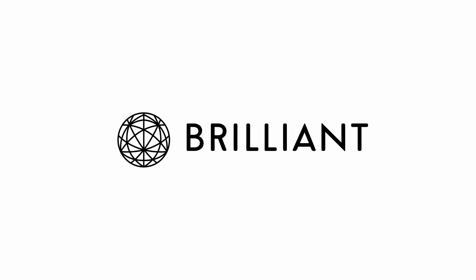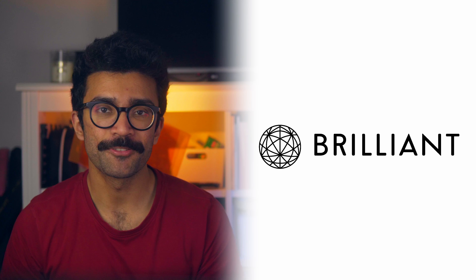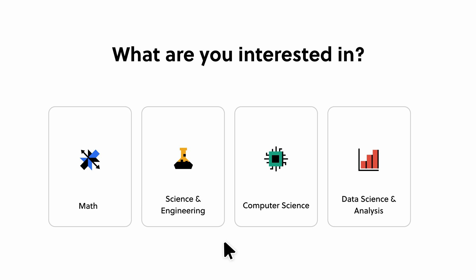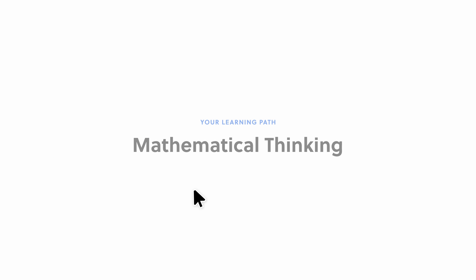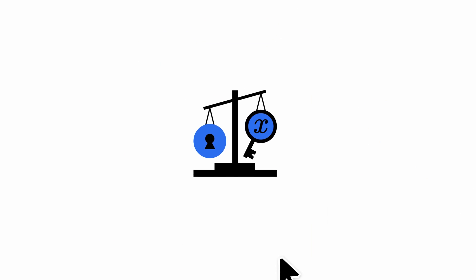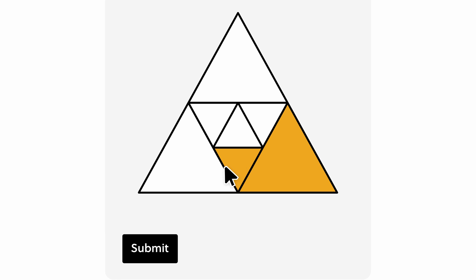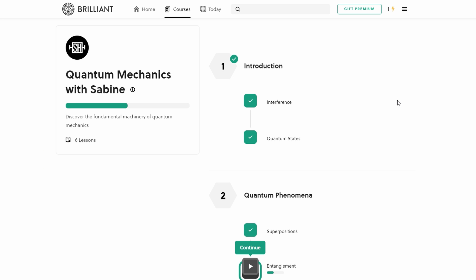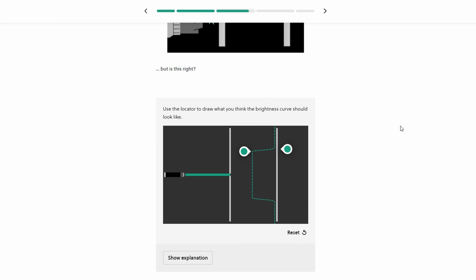Now before we continue, I want to take a moment to talk about Brilliant, the sponsor of this video. I am a huge fan of lifelong learning and of well-designed learning materials that take all the faff away from learning. Well, Brilliant.org is the best way to learn maths and computer science interactively. Brilliant has thousands of lessons for all different levels of understanding, so you can start where you feel comfortable and quickly progress from there. Personally, I really like the quantum mechanics course designed by Sabine Hossenfelder, who is a brilliant scientist and also has a wonderful YouTube channel that I'm sure many of you are already familiar with.